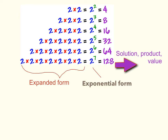Now, let's look at the different ways we can write exponents. If you look at this example, we are multiplying 2 by itself multiple times. On the left side, you will see that we have the examples written in expanded form, such as 2 times 2 or 2 times 2 times 2. When we write it in exponential form, we write the 2 as the base, since that is the number we are multiplying. Then, we write the number of times we are multiplying the 2 at the top in the exponent spot. At the right, in purple, you see that we have the solution, which you can also refer to as the product, since we are multiplying with exponents. You can also think of this as the value of the exponential expression.